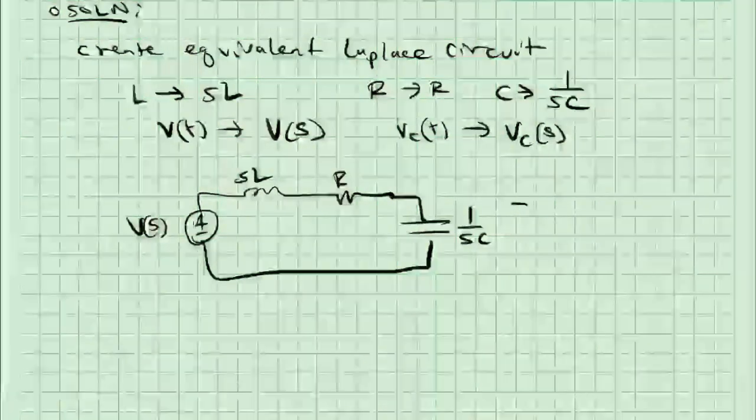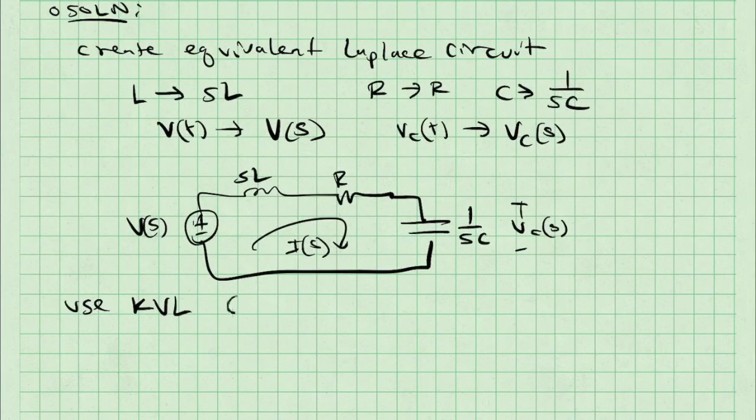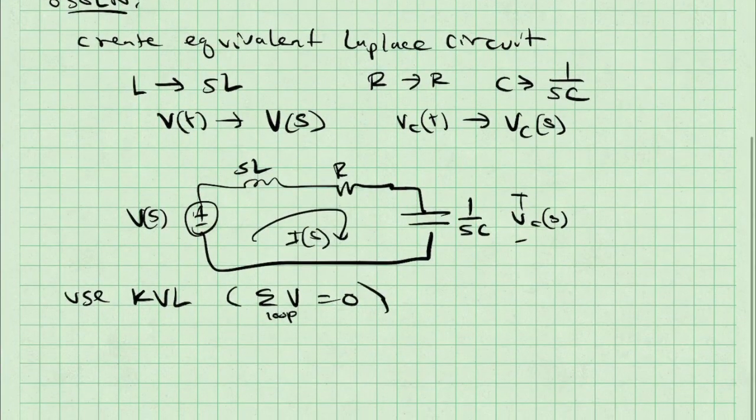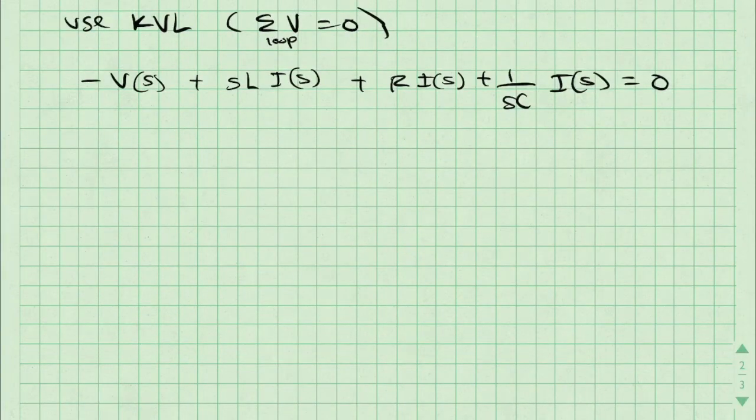Then I'm going to use Kirchhoff's voltage law, which says that the sum of voltages around a loop is equal to zero. Starting in the lower left-hand corner and working my way in a clockwise fashion, I get negative Vs plus SLI of S, that's the voltage across the inductor, plus R I of S, voltage across a resistor, plus 1 over SCI of S, which is the voltage across the capacitor.